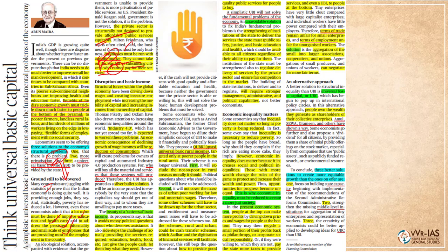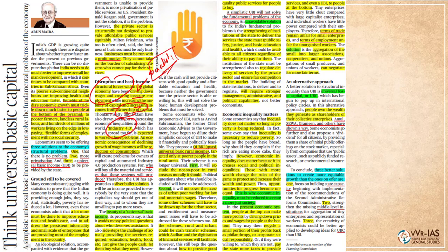Basically, the private sector will not take interest in providing services to those who cannot afford to pay for them. Then he comes to the third solution, which is being mooted by the government in the upcoming budget. He says that structural forces within the global economy have been driving down wages and creating insecure employment. This is the basic socialist theory — this article is largely based on the socialist philosophy. He says Industry 4.0, the fourth industrial revolution, which has not yet spread too far, is expected to worsen these problems. An economic consequence of declining wage income growth will be reduction in consumption — for who will buy all the material and services that these systems will produce?